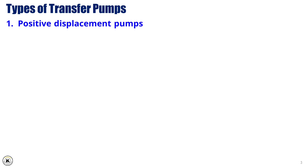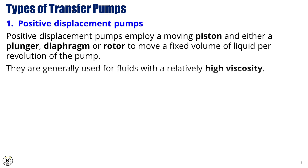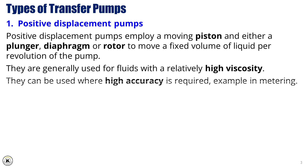Now let's talk about the different types of transfer pumps. The first main category is positive displacement pumps. These pumps work by using a moving piston and one of several mechanisms, such as a plunger, a diaphragm, or a rotor, to move a fixed volume of liquid with each revolution. Rather than relying on velocity to move the fluid, they displace a specific amount with every cycle, which makes them highly consistent and predictable. They are especially useful when dealing with fluids that have relatively high viscosity, and are ideal for situations that require high accuracy, like metering applications where you need to deliver precise volumes.